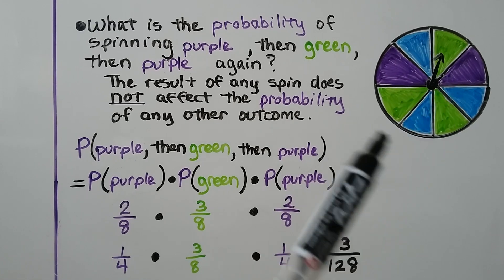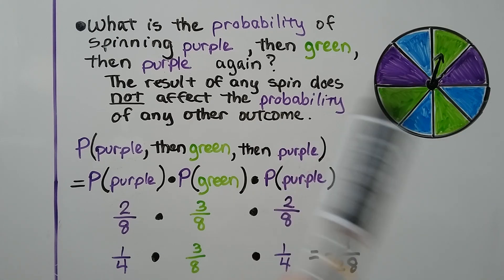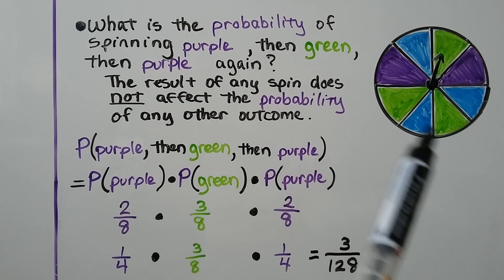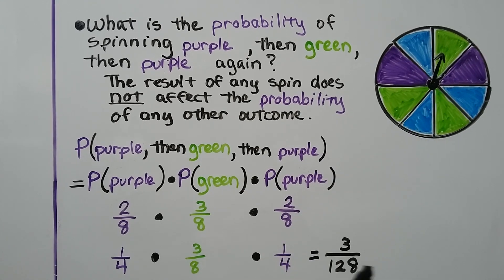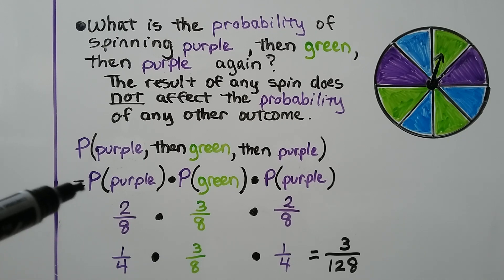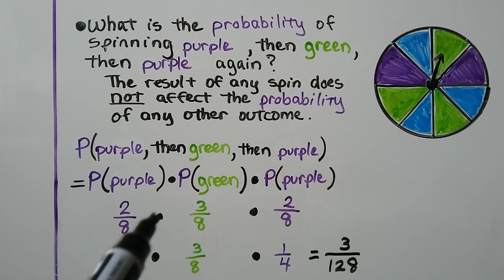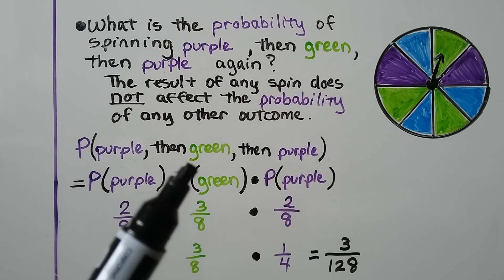Here we have a spinner with colors: green, purple, and blue. What's the probability of spinning purple, then spinning green, then spinning purple again? There are eight sections — two are purple, so that's 2/8; green has three sections out of eight, so that's 3/8. The probability of purple, then green, then purple would be 2/8 times 3/8 times 2/8. Since 2/8 simplifies to 1/4, we have 1/4 times 3/8 times 1/4, which gives us 3/128.